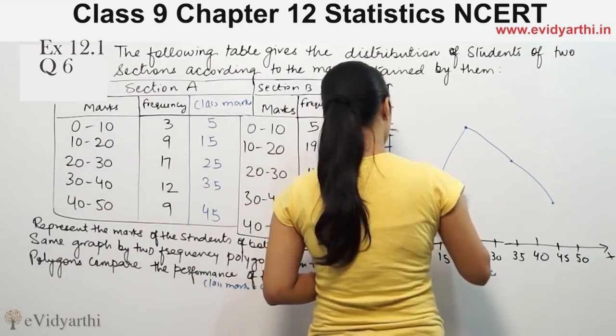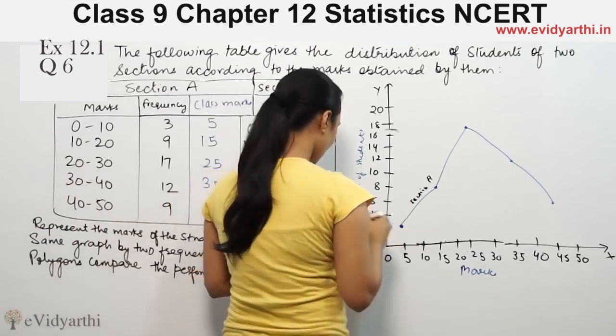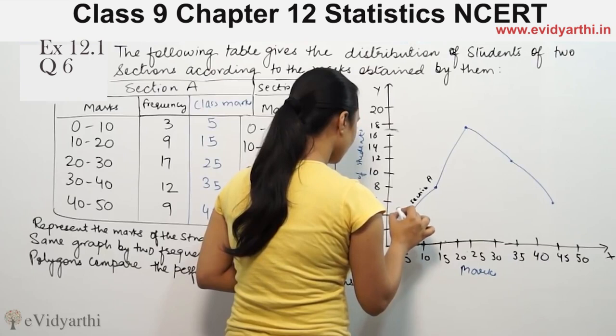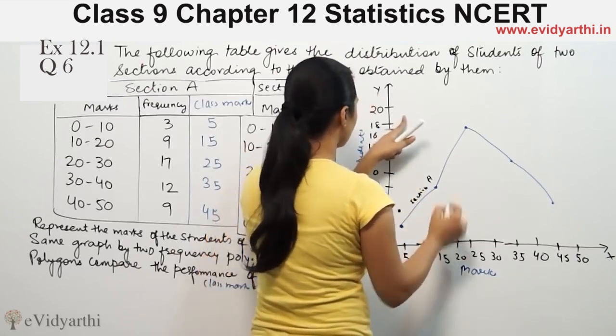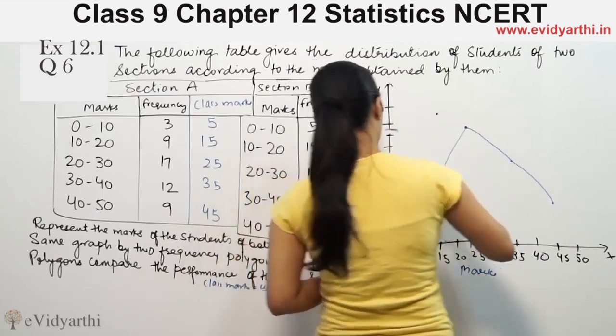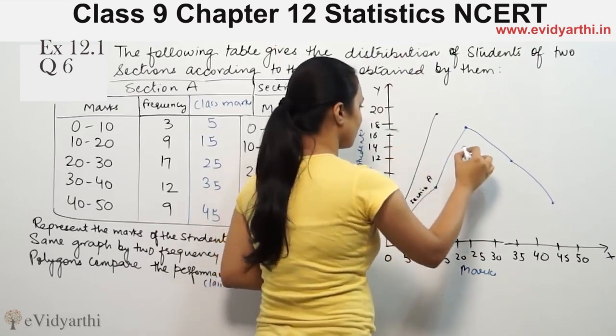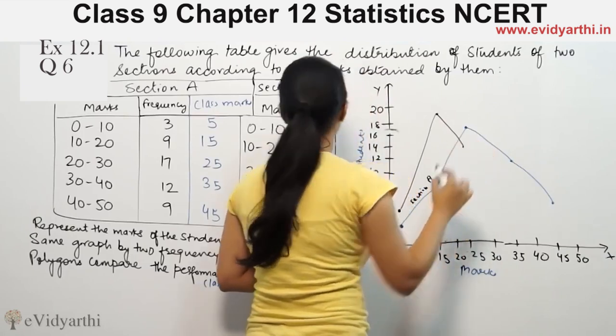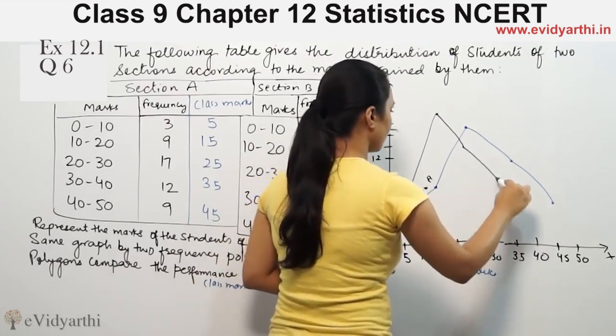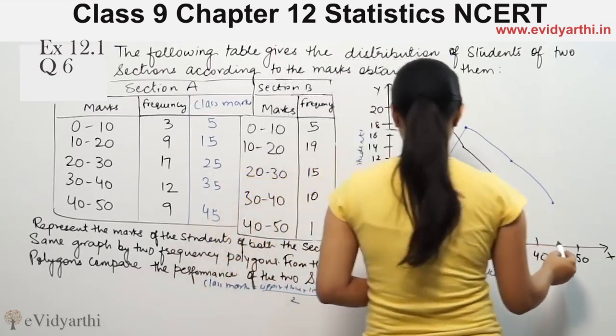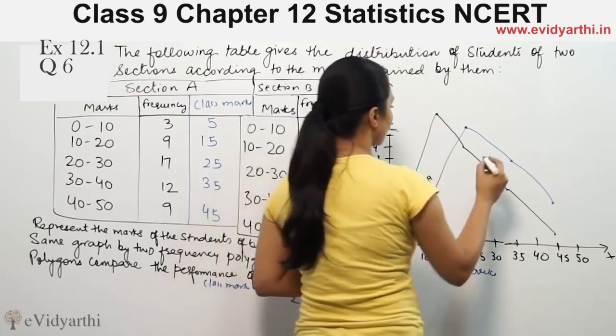Now for Section B, class marks are the same and the frequency changes. At 5, frequency is 5. Then 15 and 19. Then 25 and 15. Then 35 and 10. Then 45 and 1. This is for Section B.